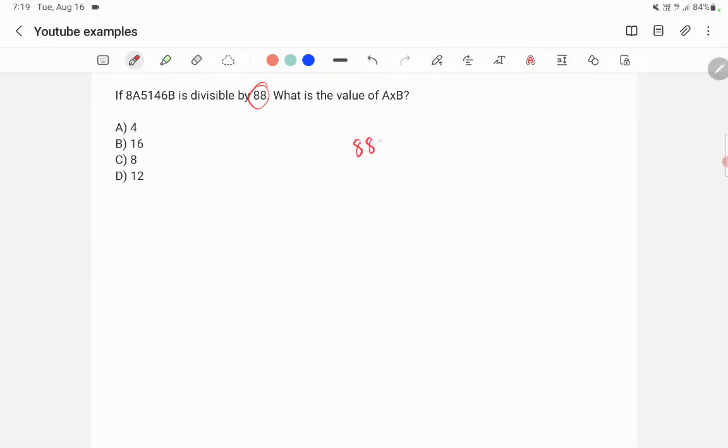You can write 88 = 11 × 8, and you know the divisibility rules for both 8 and 11. This number will satisfy the divisibility rules for both 11 and 8. First, we will apply the divisibility rule for 8.